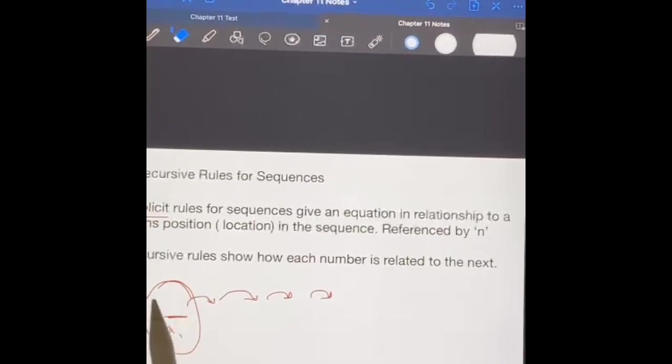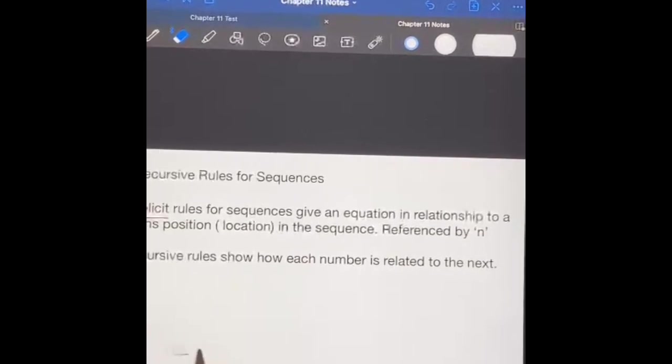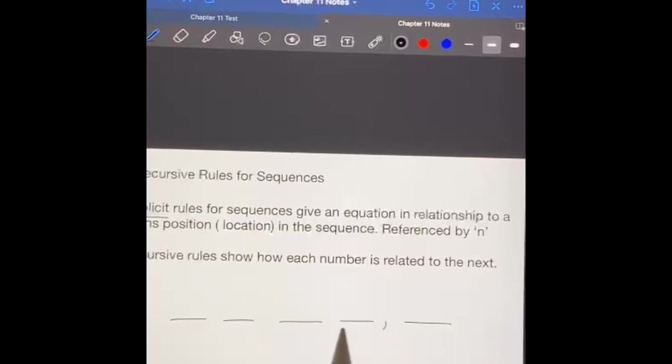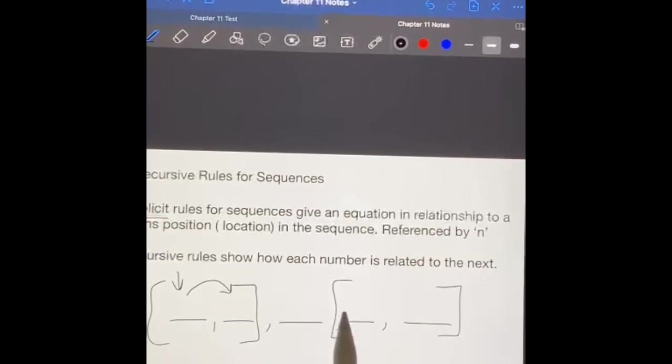The difference when we ask for a recursive rule means that when we have a sequence, we are not necessarily starting at the beginning and telling you how to get to the end. It relates from one term to the next. It tells you how to go from a term before to get to the next term, and so it might be these two terms, how to get from four to five.